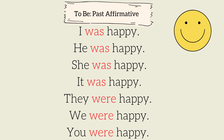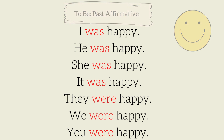Now, let's learn how to use the be verb in the past. Listen and repeat. I was happy. He was happy. She was happy. It was happy. They were happy. We were happy. You were happy.